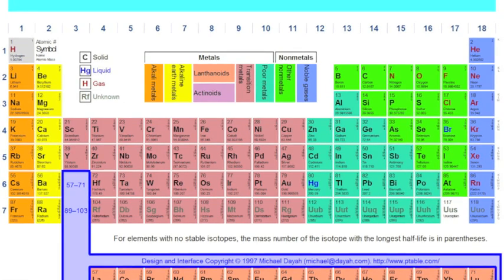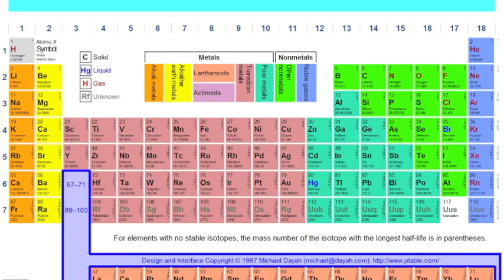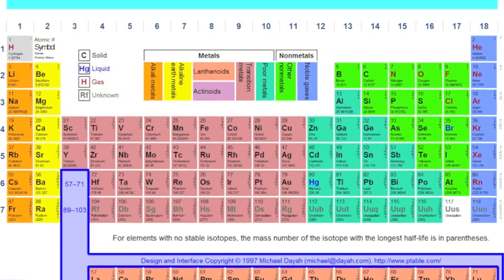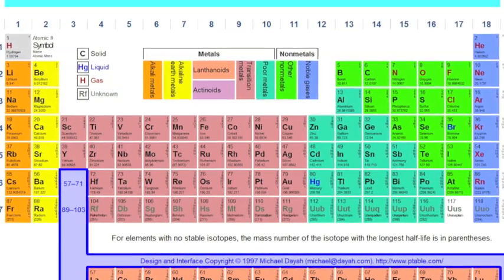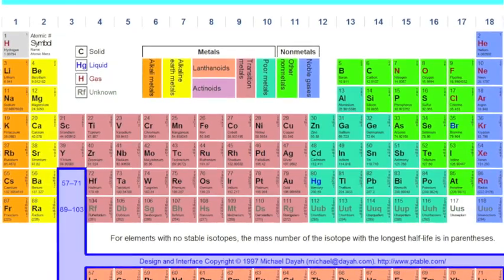You could do that for each element on the periodic table, all of them. Then when you want to recall the list, you just mentally close your eyes, walk back through the room in your head, and you see a hydrogen bomb, you think of hydrogen.